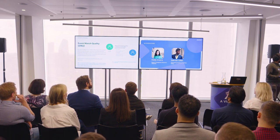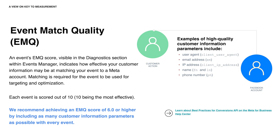Before going further on implementing Conversions API, it's important to highlight EMQ scores. EMQ indicates how effective your customer information may be at matching your event to a Meta account — this is important for targeting and optimisation. It is based on the parameters you pass back, such as email, phone, or user agent. It is a score out of 10, and at Meta we recommend a score of six and above so that we have a good enough read on conversions passed back. This is also a requirement for using Conversion Lift.